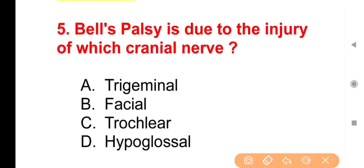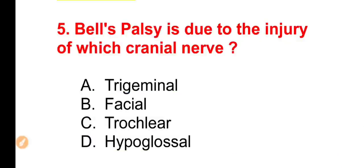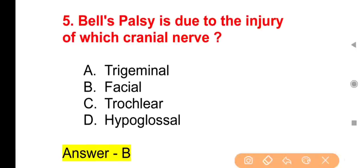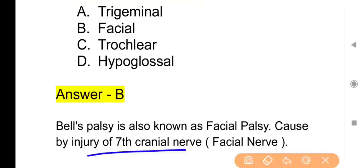Question 5: Bell's Palsy is due to injury of which cranial nerve? Options: Trigeminal, Facial, Trochlear, Hypoglossal. The right answer is Option B — Facial nerve injury causes Bell's Palsy. The facial nerve is also known as the 7th cranial nerve.